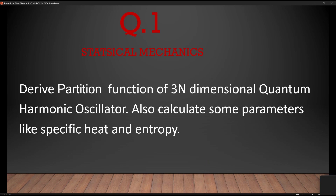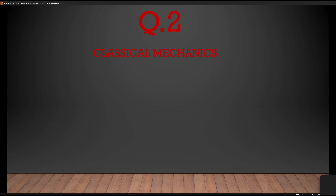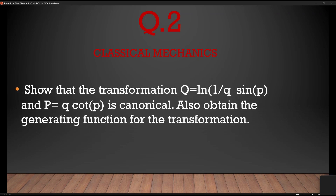Question 2 was from classical mechanics: show that the transformation q = ln(1/q · sin p) and p = q · cot p is canonical. Also obtain the generating function for the transformation.